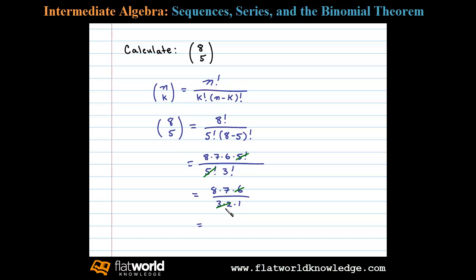So the final result for the binomial coefficient 8 choose 5 is equal to 8 times 7, or 56.